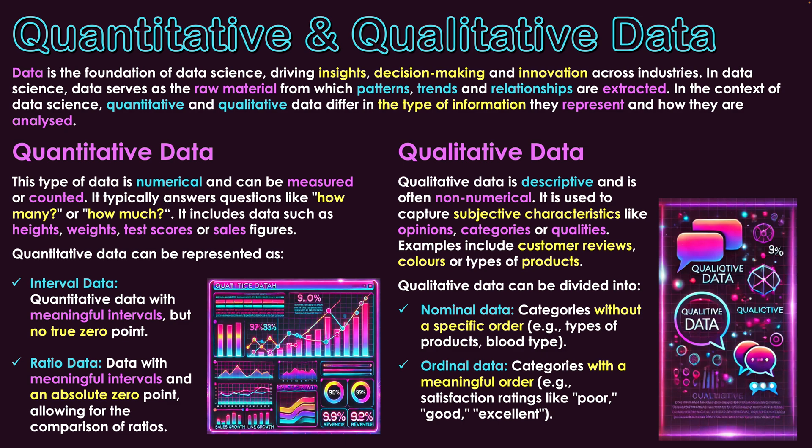To summarize this introduction to quantitative and qualitative data: quantitative data deals with numerical values that have meaningful increments, allowing us to track differences between values. Qualitative data is about categorizing data in a meaningful, organized manner — whether through levels of hierarchy or simple classifications — so that things can be grouped in ways that are meaningful and support our data sets.